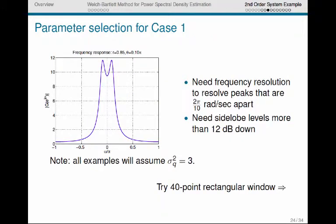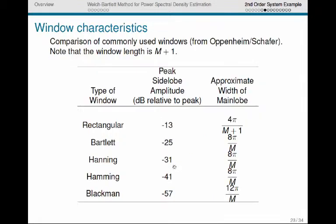So let's look at case 1. This is the underlying frequency response for case 1, and so we would square that and multiply by sigma q squared to get our expected power spectral density. And what we're going to see here is that we've got these peaks at around plus and minus pi over 10. So we have to resolve peaks that are basically 2 pi over 10 radians per second apart. For all the examples in this set of slides, we're going to assume sigma q squared is 3. The other thing is we've got about 10 dB here of dynamic range if we take the log spectrum.